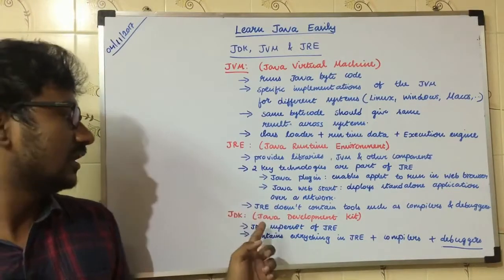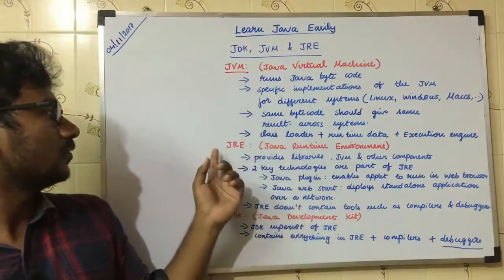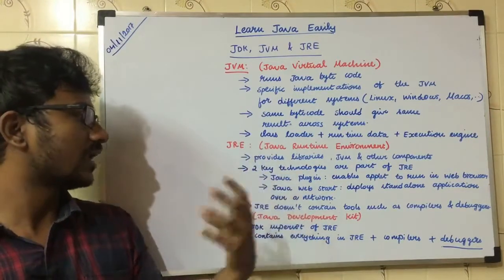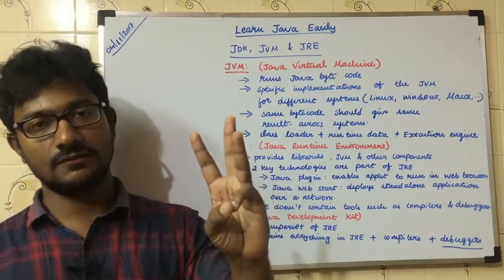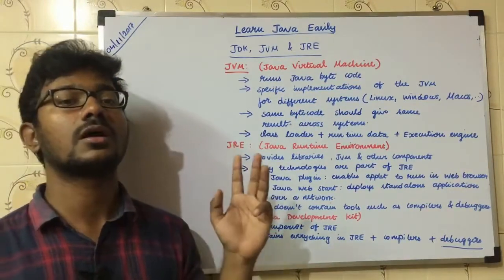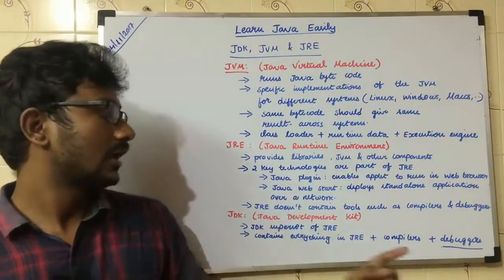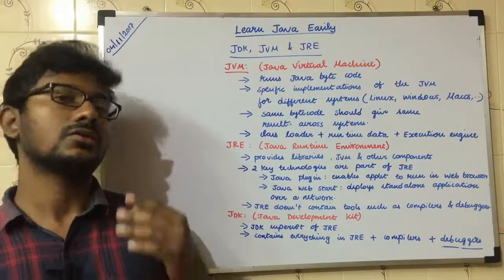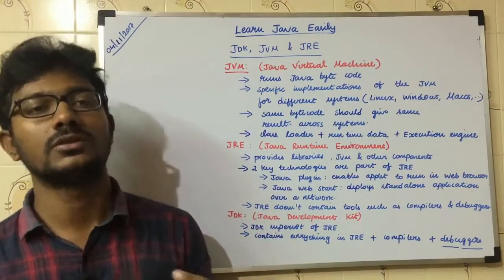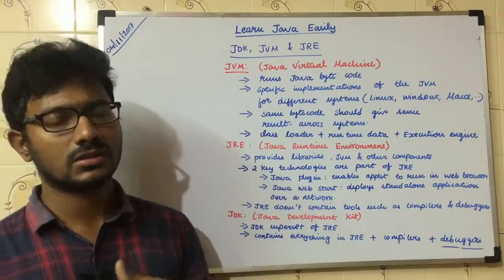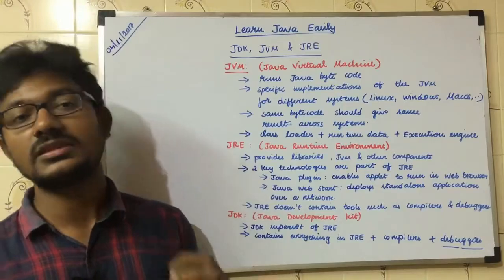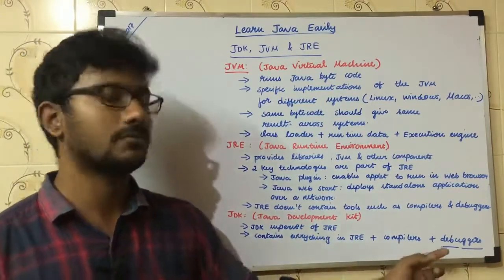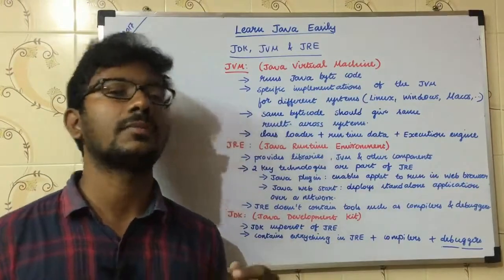The second one is JDK. JDK is a superset of JRE, meaning JDK contains everything in JRE plus compilers and debuggers. The compiler is the tool that converts Java source code — the .java file — into bytecode. The debugger helps you find and fix bugs in your program. If you have a bug or a problem in your program, the debugger saves you time. So if you need to develop Java applications, you use JDK.